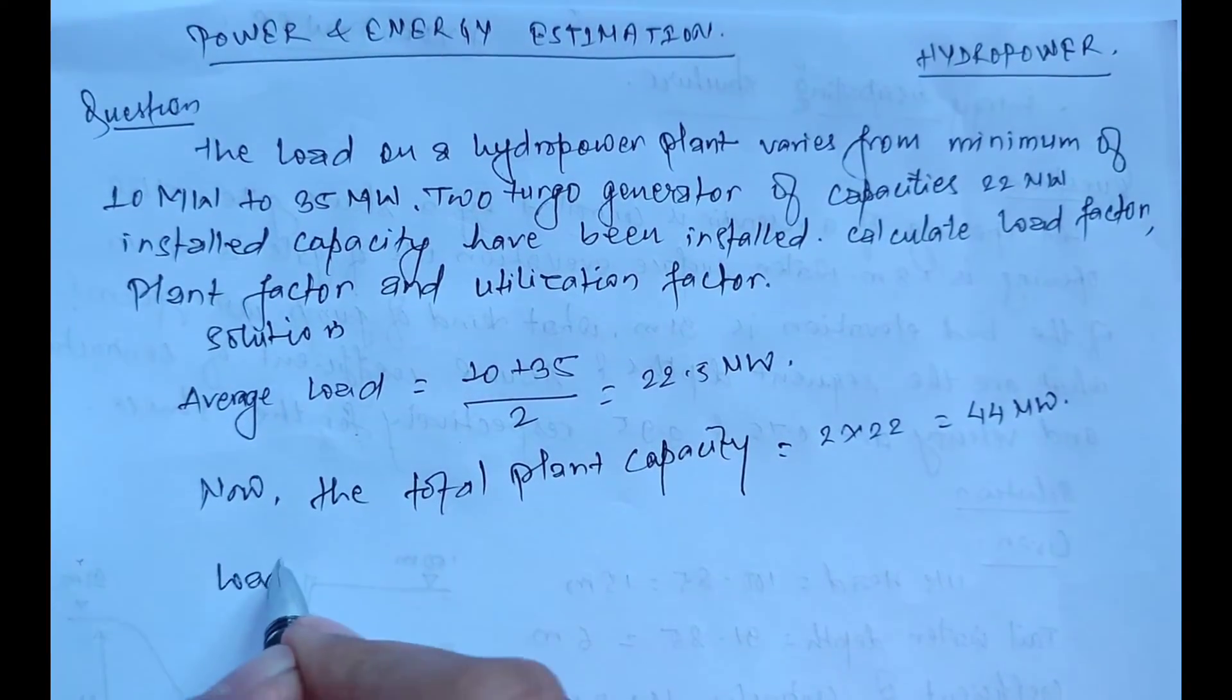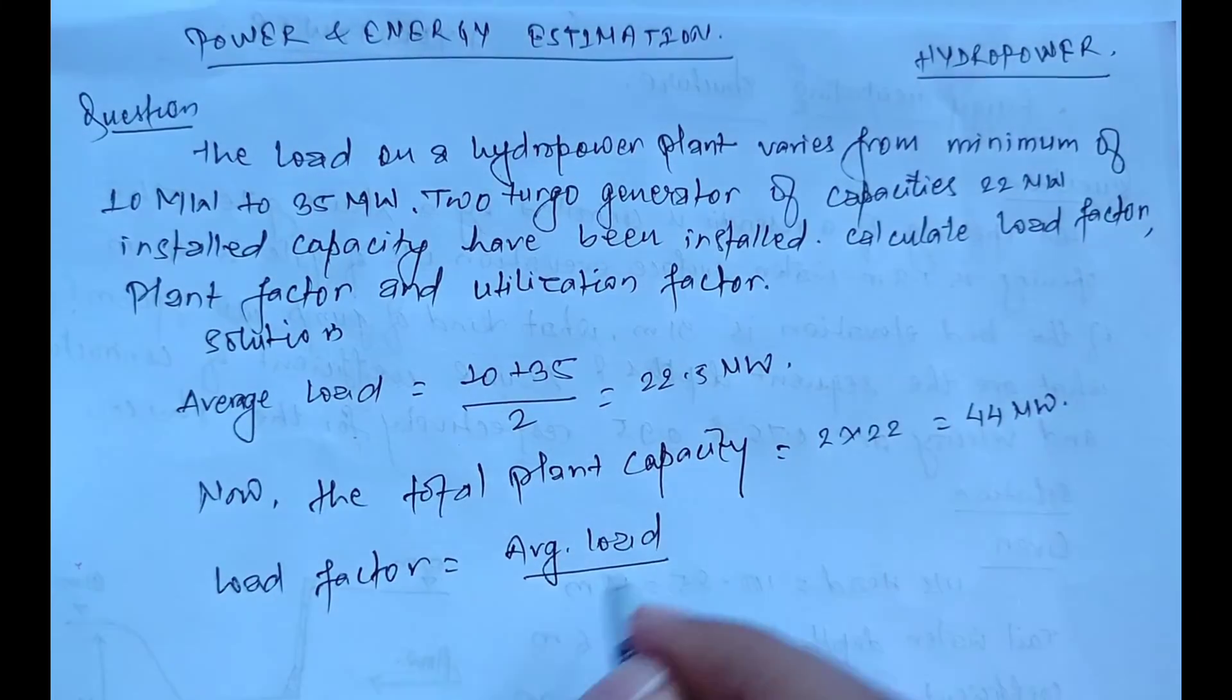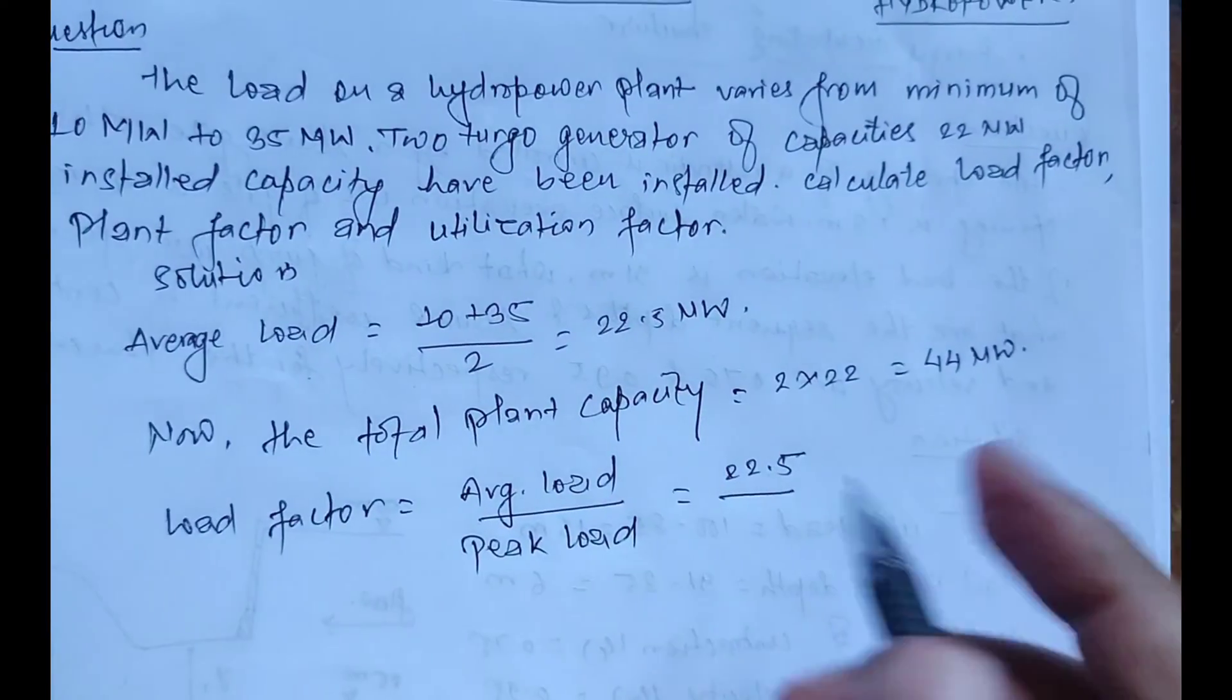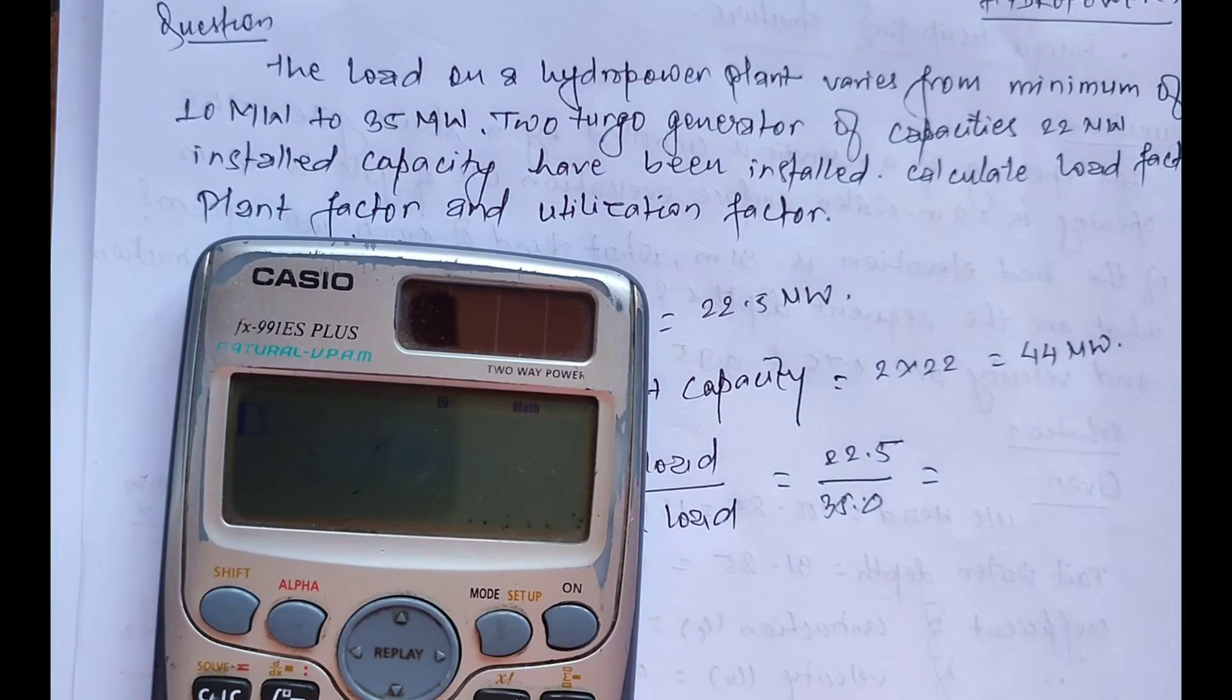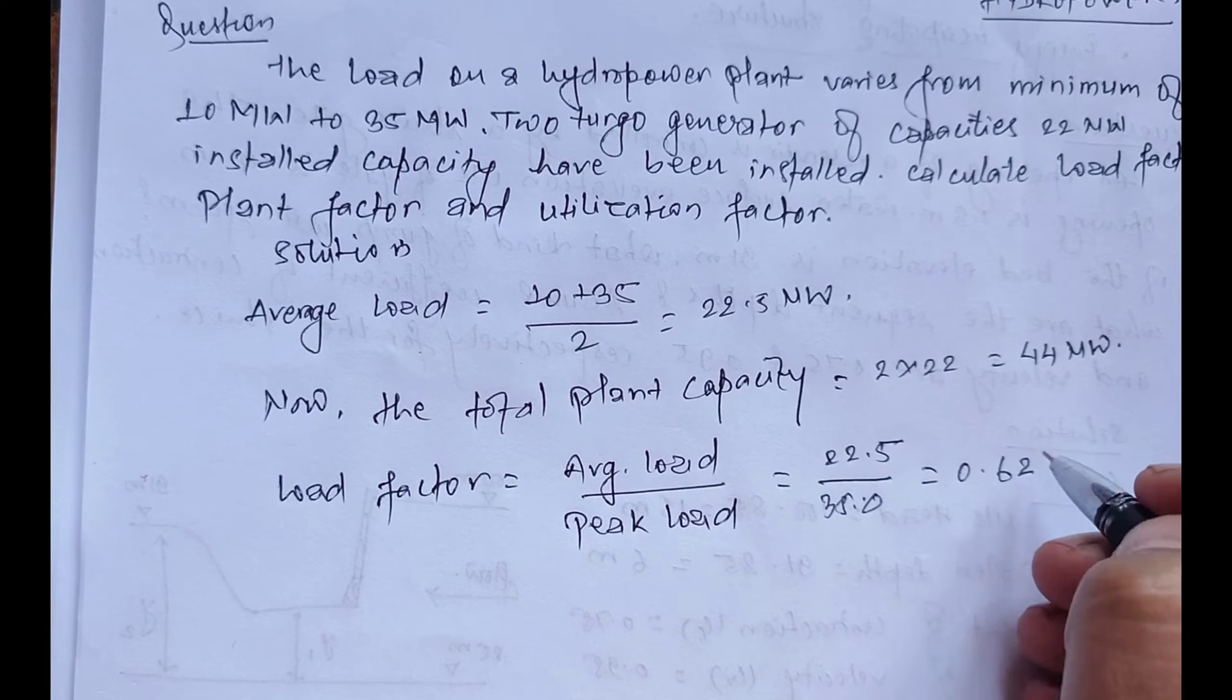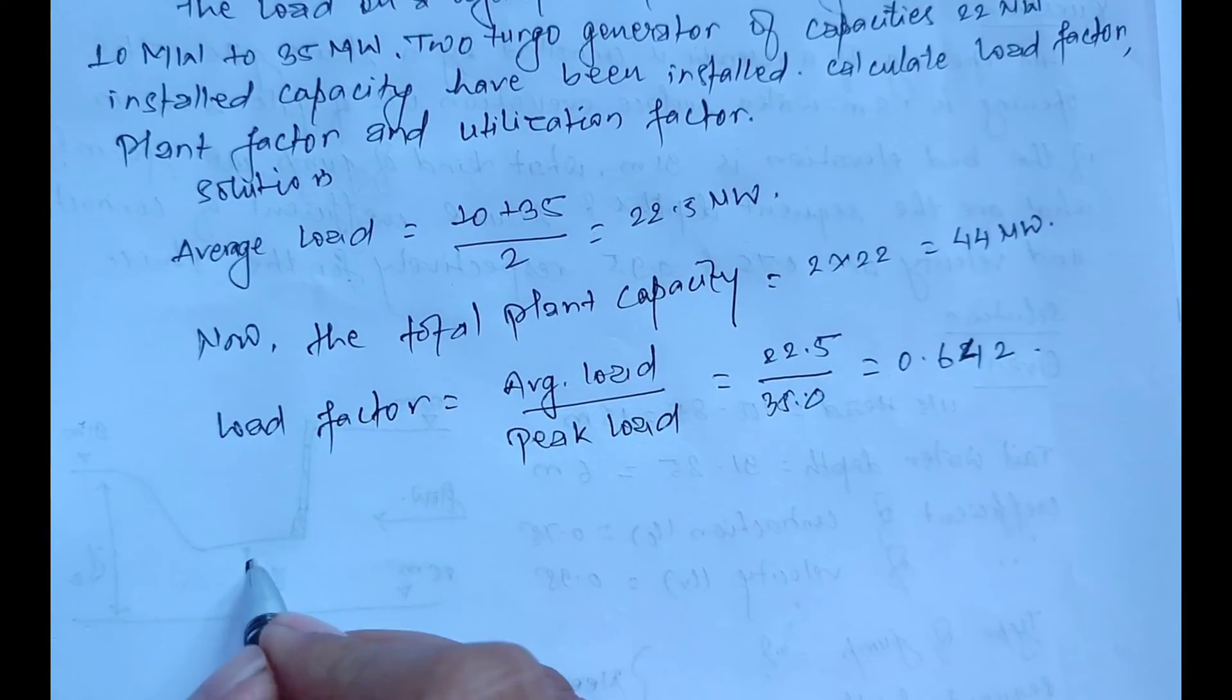load factor equals average load divided by peak load, where our average load is the calculated value of 22.5, and the peak load is already given in the question as 35 megawatts. Equals 22.5 divided by 35, which means 0.642. That's the load factor. After that we have